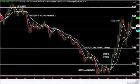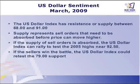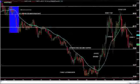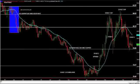Now there are only two things that could happen. We could base at this point in time, take out the rest of the sellers here, and then rally up to the next level higher above. Or there are just too many sellers and we could drop from here. And that's the reason that prior slide says: if the supply orders are absorbed, then we can test the old highs near 92.50. But if the sellers win the battle, we probably test the 79 support.